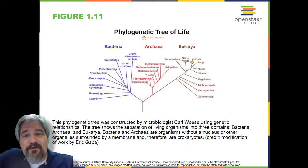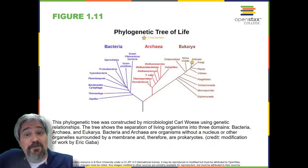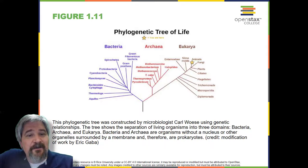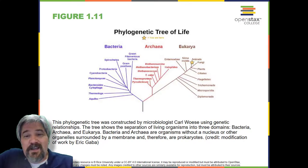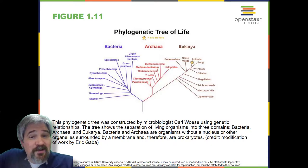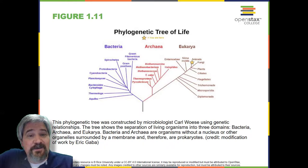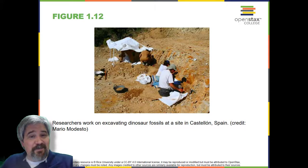Many organisms belonging to the archaea domain live under extreme conditions and are called extremophiles. To construct his tree, Woese used genetic relationships rather than similarities based on morphology. Woese's tree was constructed from comparative sequencing of genes that are universally distributed, found in some slightly altered form in every organism, conserved — meaning they have remained only slightly changed throughout evolution — and of an appropriate length.